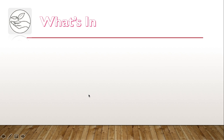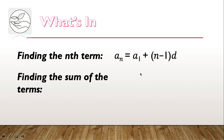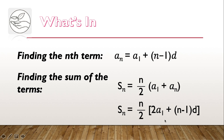In our previous lesson, we already learned how to get the n-th term in an arithmetic sequence using this formula: A sub n is equal to A sub 1 plus n minus 1 times d, where A sub n is the n-th term, A sub 1 is our first term, n is the number of terms, and d is the common difference. We also learned how to find the sum of the terms using two formulas — use whichever given is available and appropriate. You need to have prior knowledge with these because they are useful in solving word problems involving arithmetic sequence.